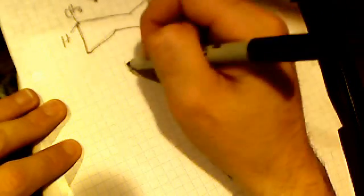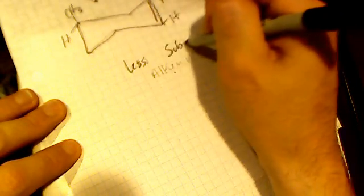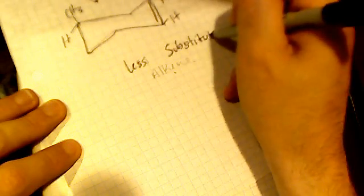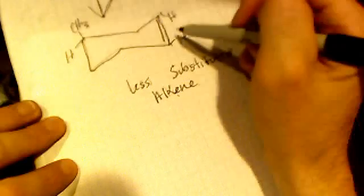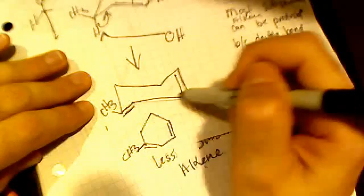But this is less substituted, it's only disubstituted, right? That's why it is minor. It only has two substituents, whereas the major product had three with the methyl group, so it was tri-substituted.